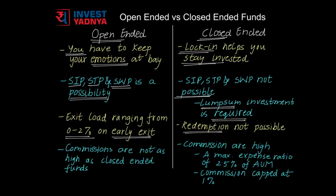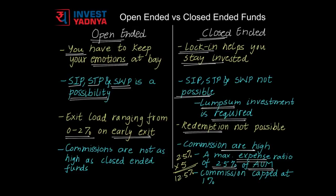Distributors may influence investors to invest into closed-ended funds due to the higher commissions offered. A maximum of 2.5% of assets under management can be charged as expense ratio by the fund. So, if there is a fund with an expense ratio of 2.5% and a duration of 5 years, it can collect 12.5% of the AUM as expense ratio over those 5 years. This becomes a guaranteed income for the fund, and so it can offer higher commissions to its distributors. Though the commission paid upfront to distributors is capped at 1% of assets brought in, a higher commission can be passed on through other incentives. Comparatively, open-ended funds cannot pay such high commissions to their distributors.